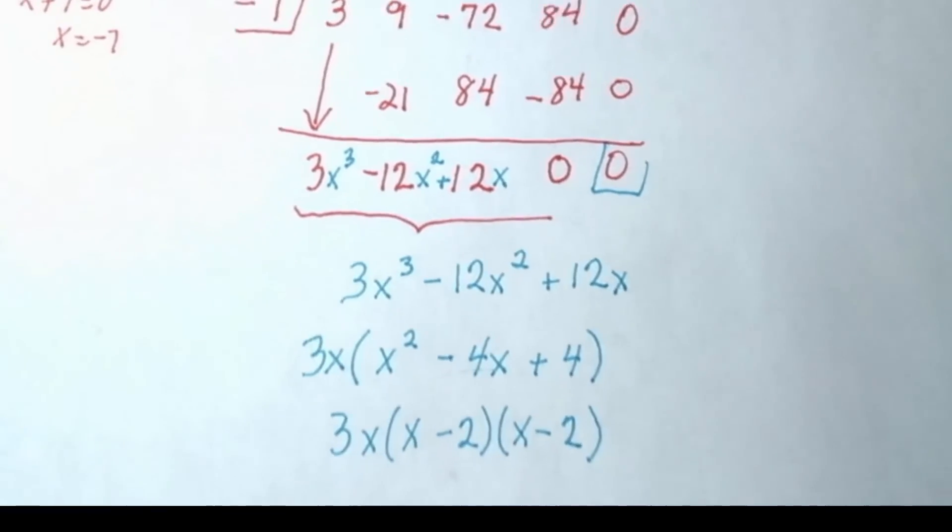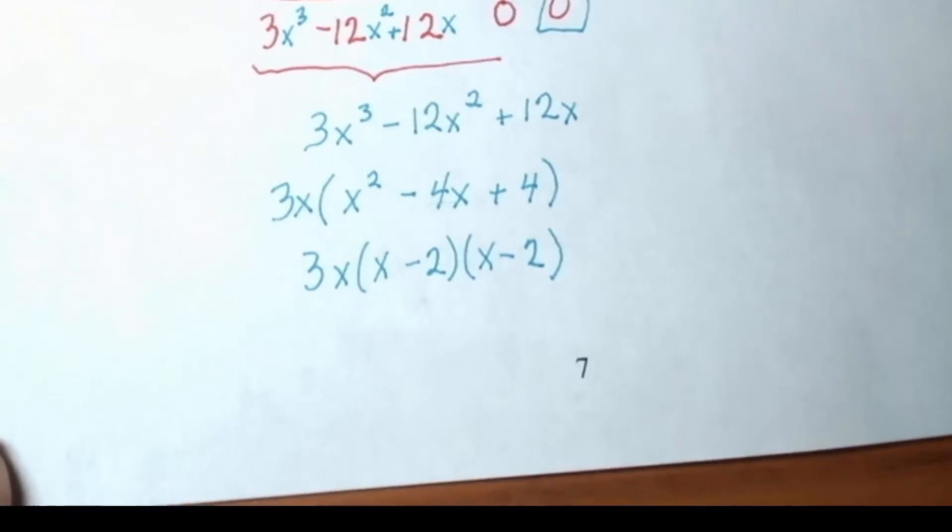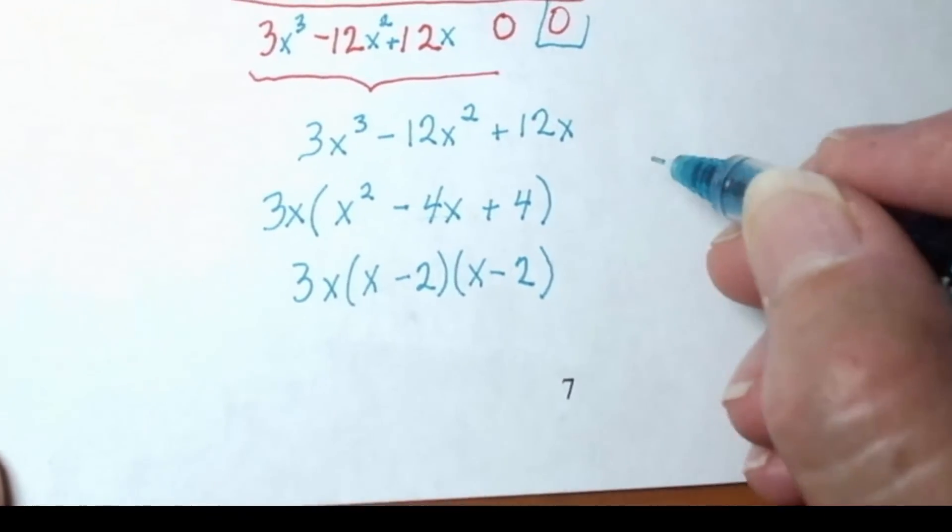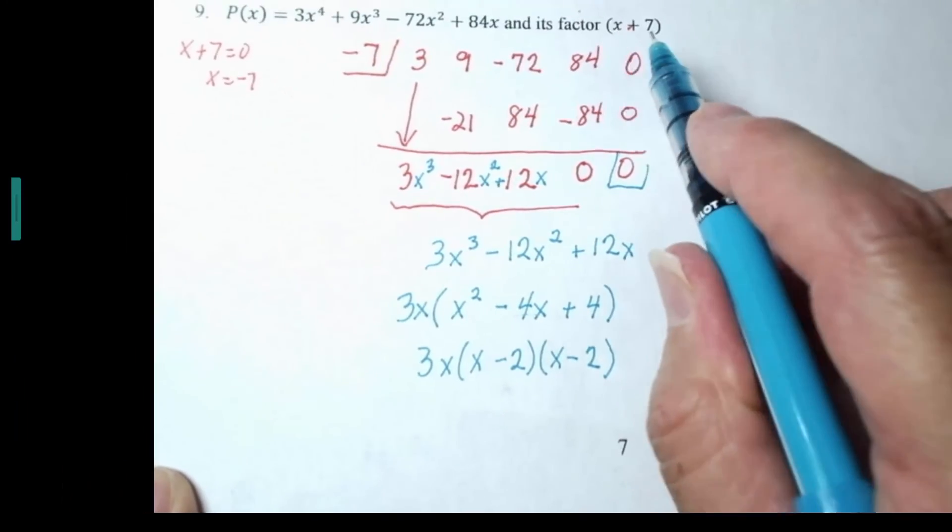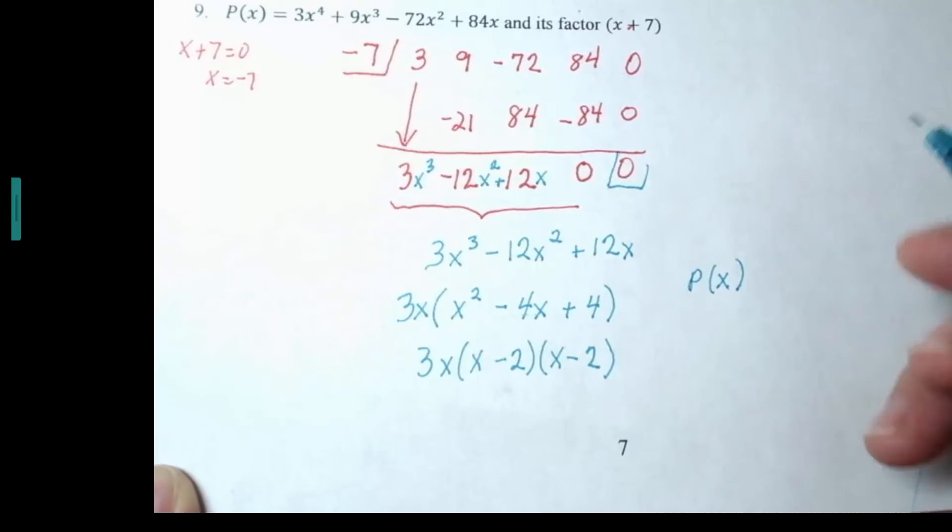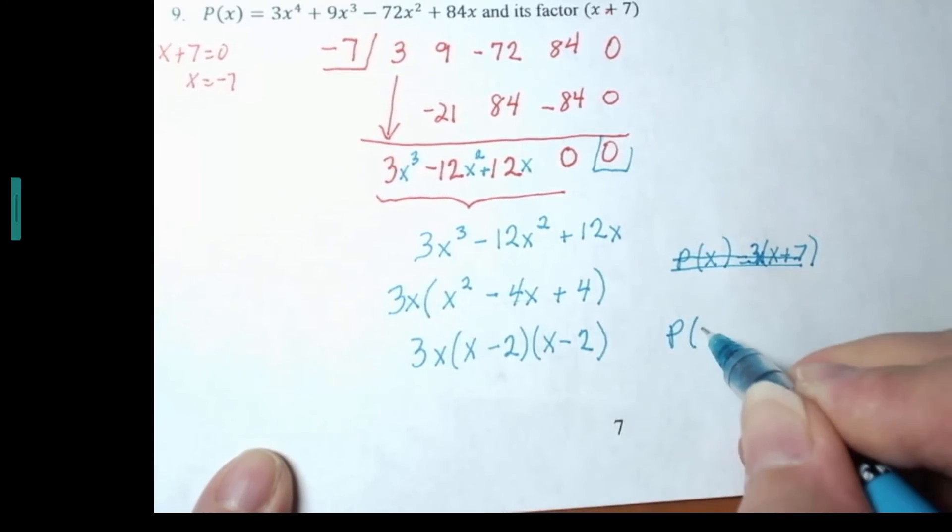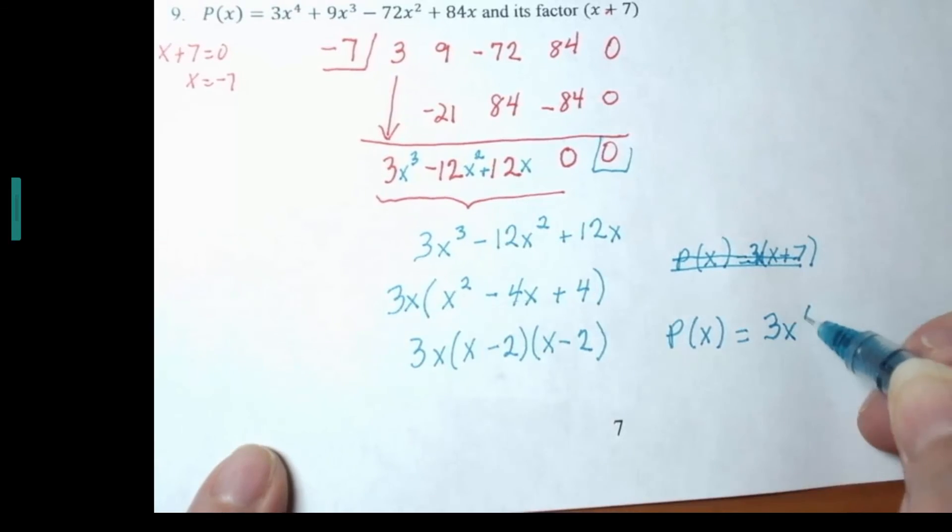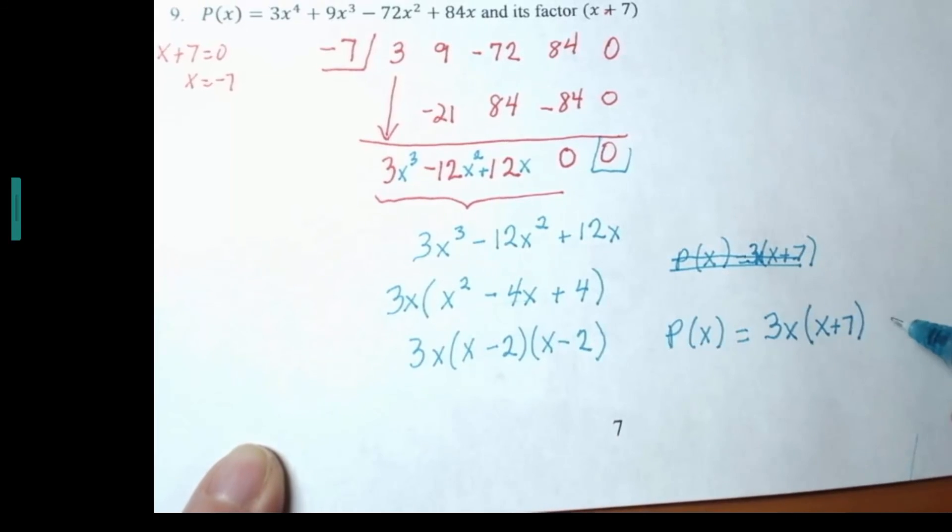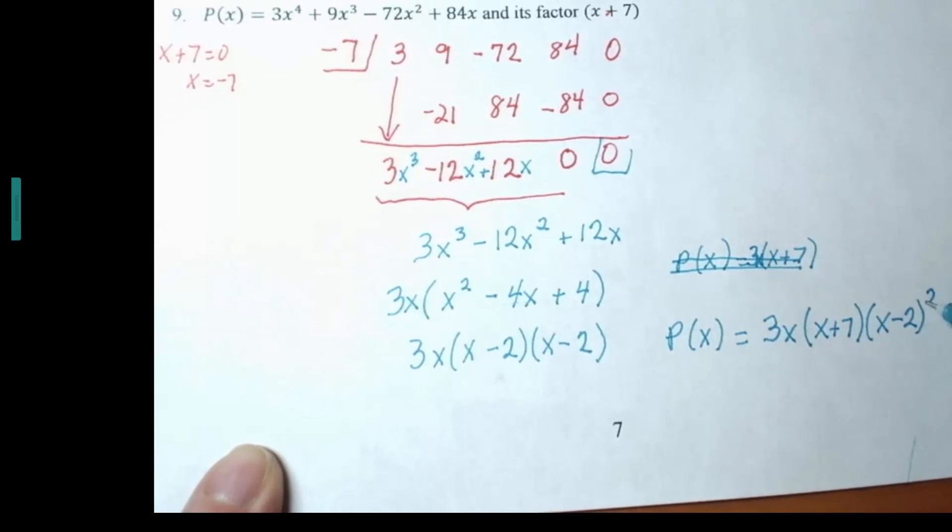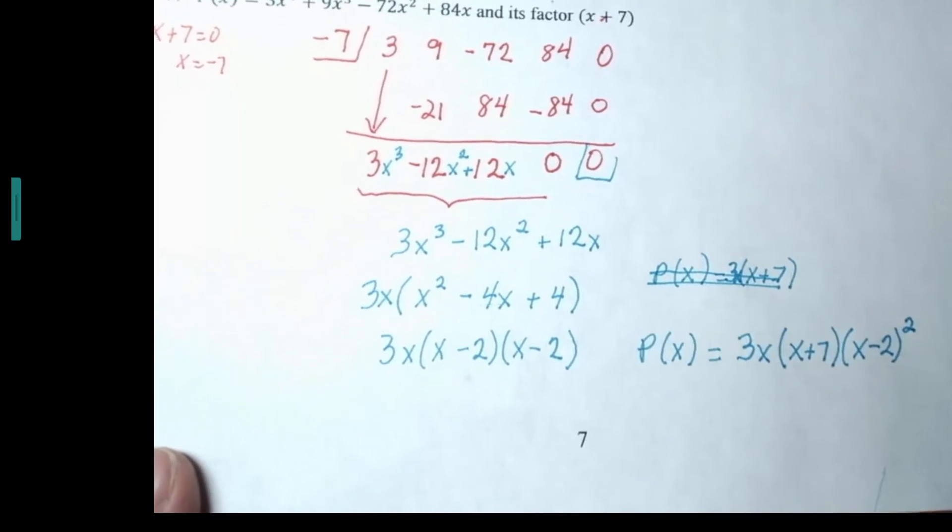So let's give the final answer here with P of x in factored form. We've got the x plus 7 that was given. I always like to put the GCF in front, so P of x equals 3x times x plus 7 times x minus 2, two of them. So if you want to put x minus 2 squared, that's okay.